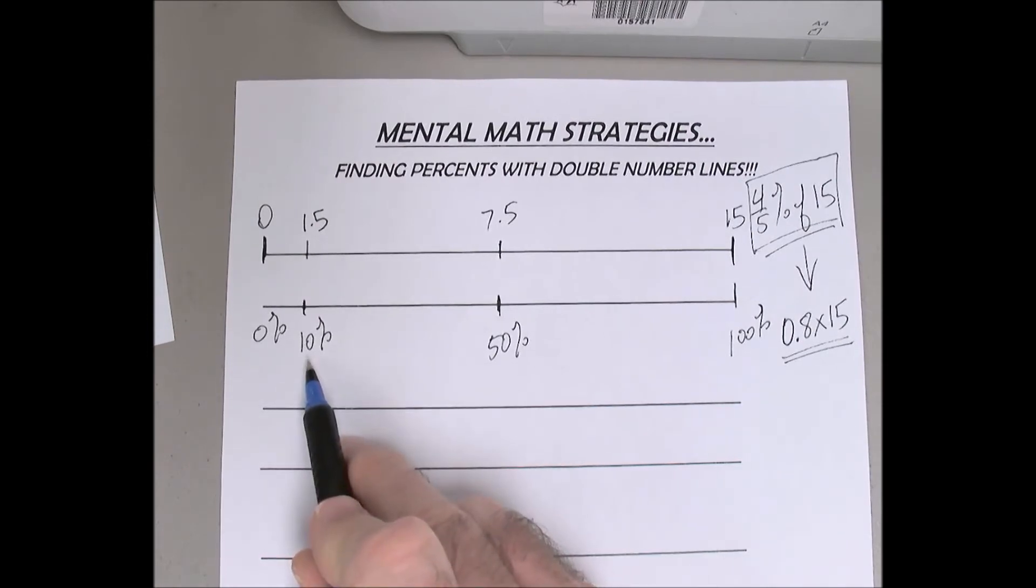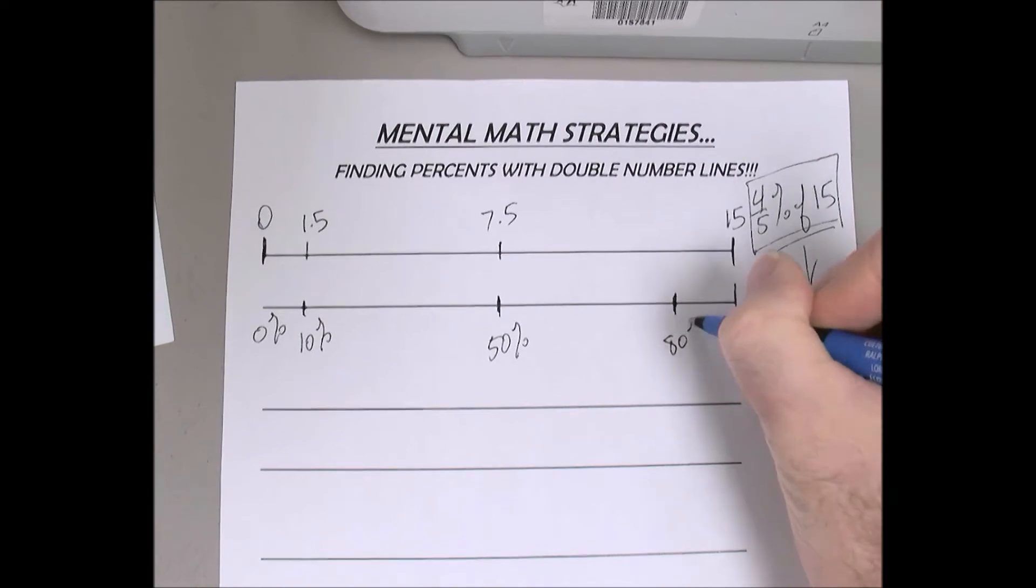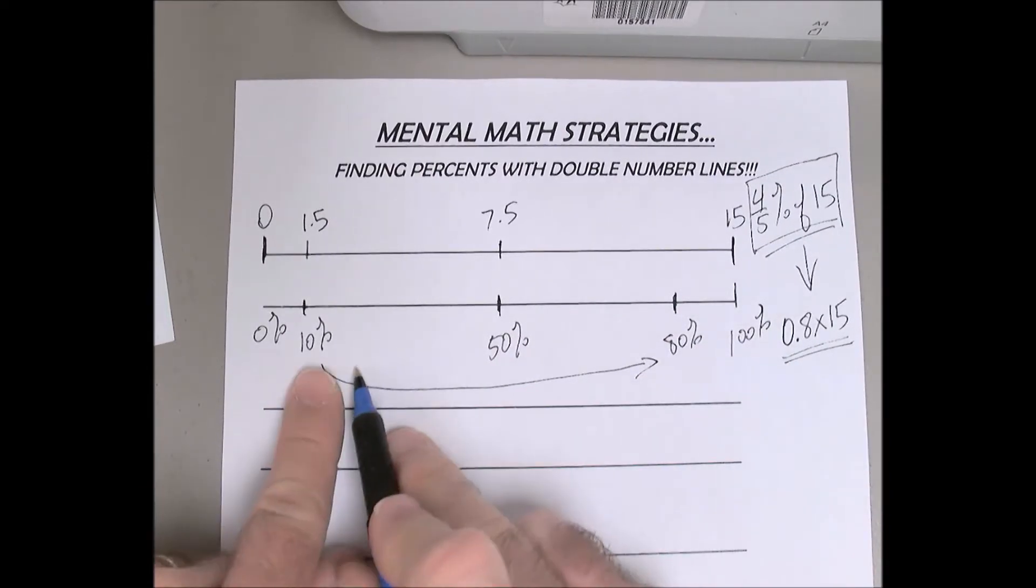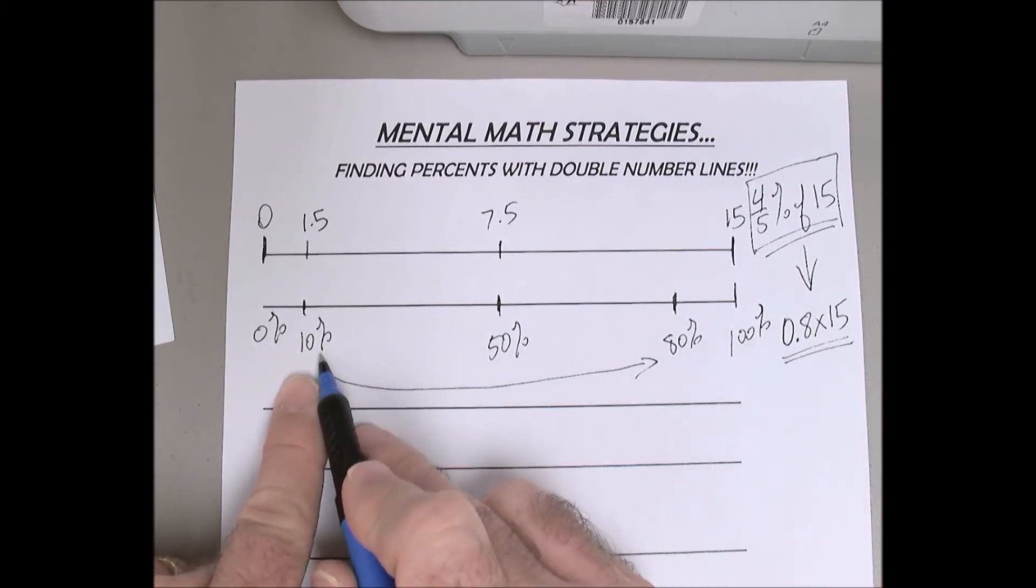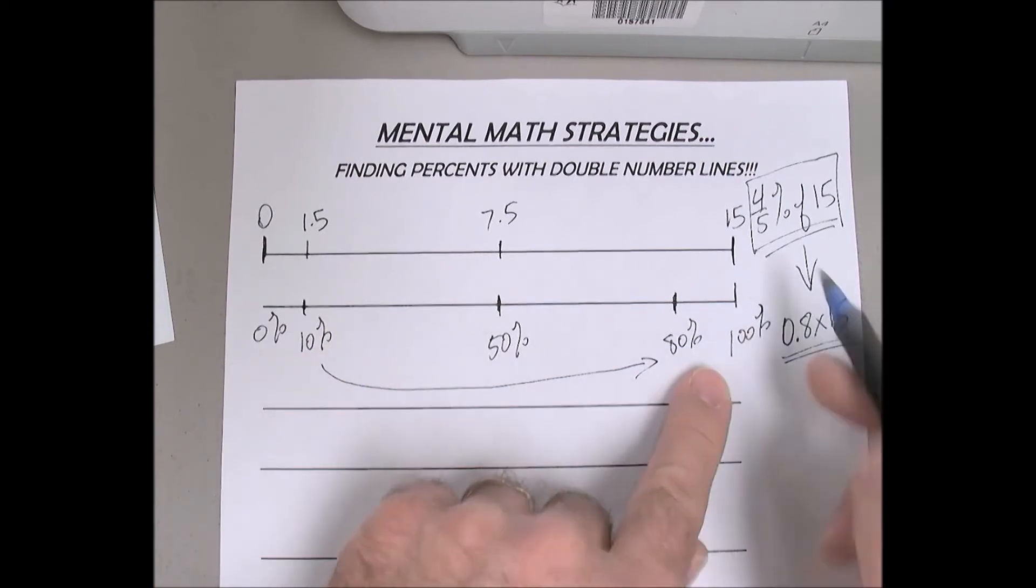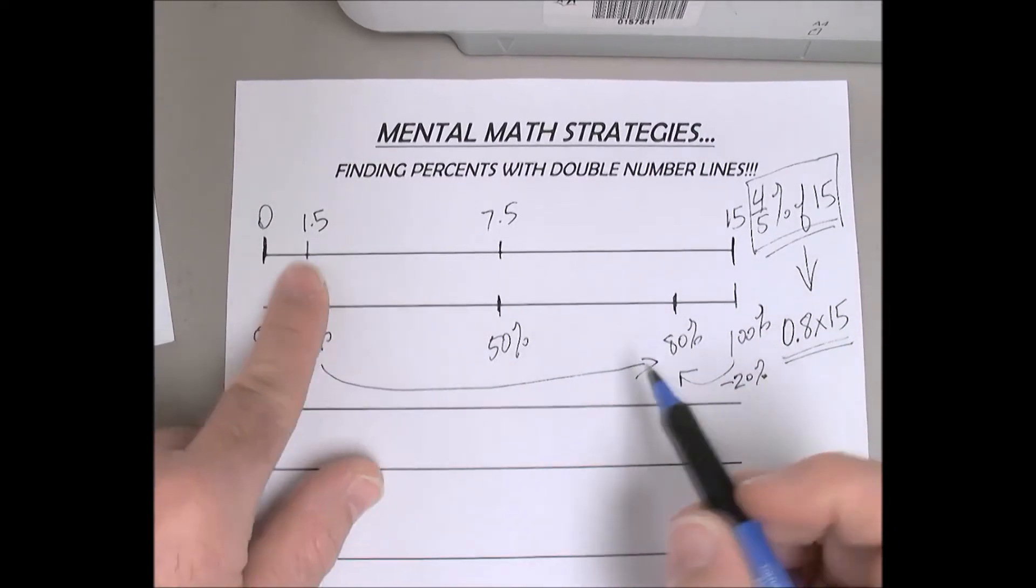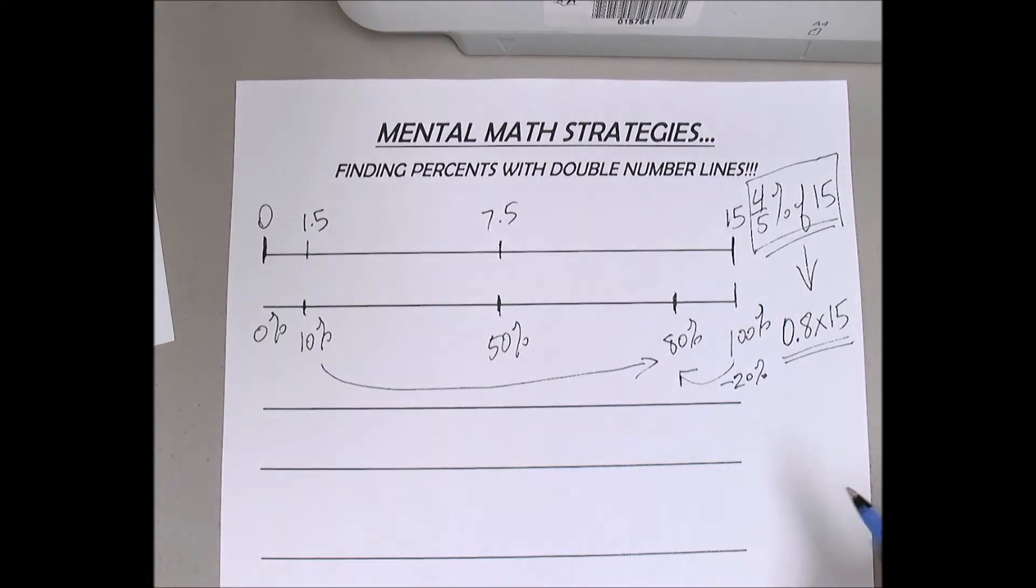Once we have ten, we can find 80 percent pretty easily by working with two groups of 10 percent and subtracting. The reason I want to use that is because two groups of 10 percent is 20 percent, which is the difference here. It also works really well with what it is, one point five, because I can multiply that by how much? By two.